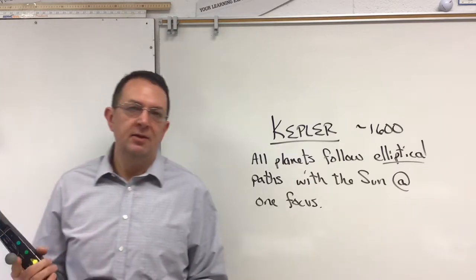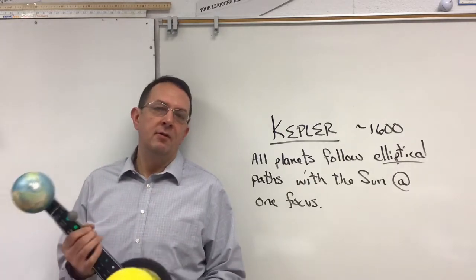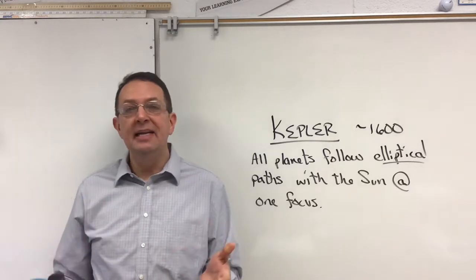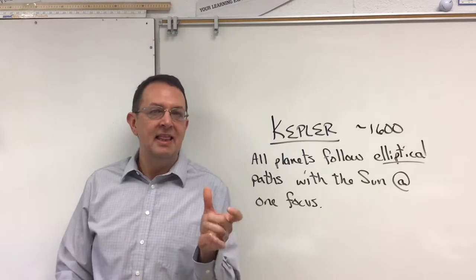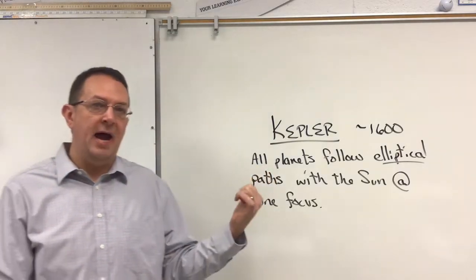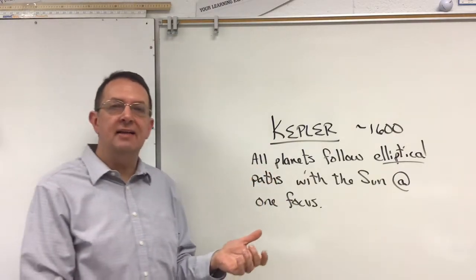Newton theoretically determined the reason why with his law of universal gravitation. Around 1700 he took his law of universal gravitation and theoretically determined this. He back-checked this thing. So why exactly is that?